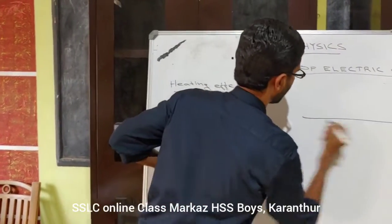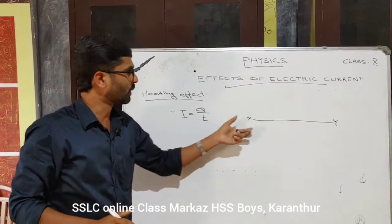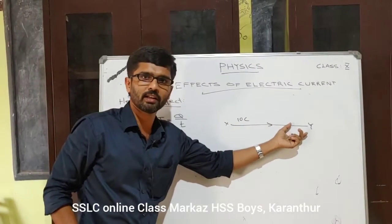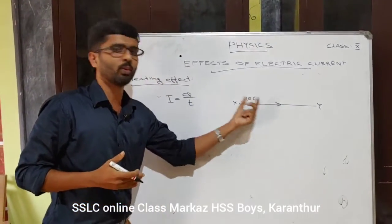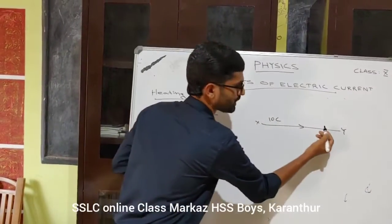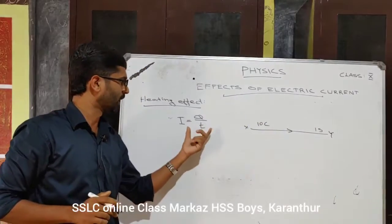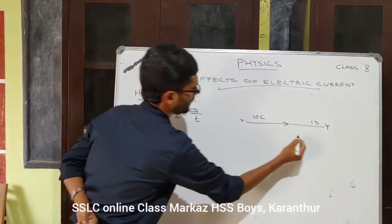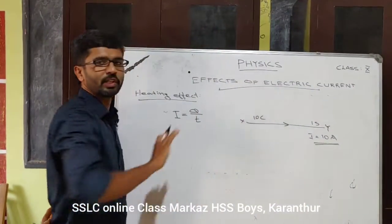For example, consider a conductor XY. If a 10 Coulomb charge flows through the conductor in 1 second, we substitute into the equation: I equals Q by T, that means I equals 10 by 1, so I equals 10 Ampere. The current through the conductor is 10 Ampere.